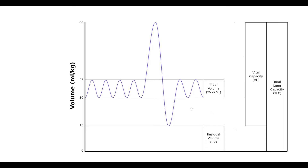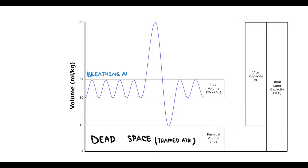Here we see the spirometry. First of all, in the lungs we have a so-called dead space — air that is trapped in the lungs. Such air does not participate in any air exchange, but this volume of air is still present inside the lungs. Initially we ask the patient to breathe as they usually do. By this we measure the volume of air inhaled and exhaled during each respiratory cycle at rest. We call such volume of air the tidal volume.